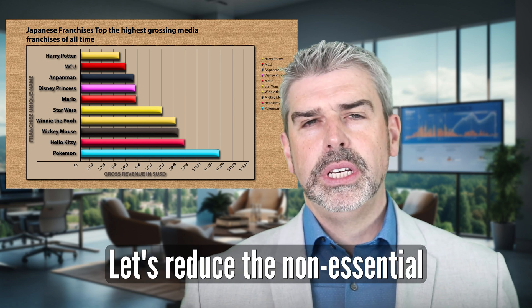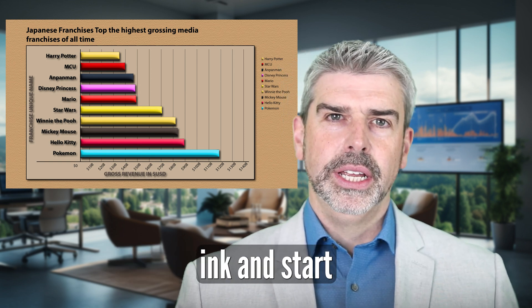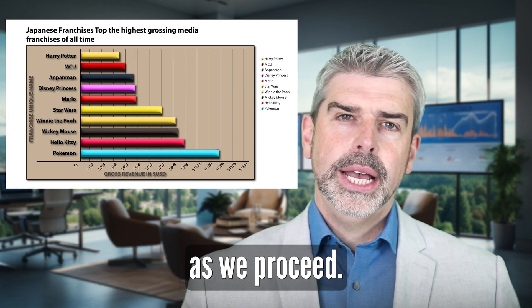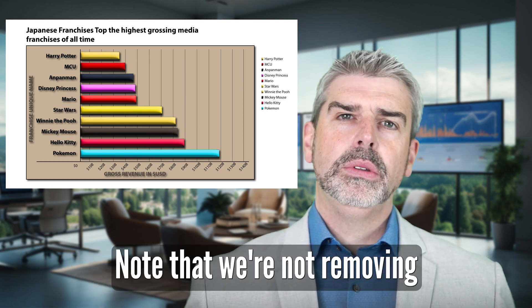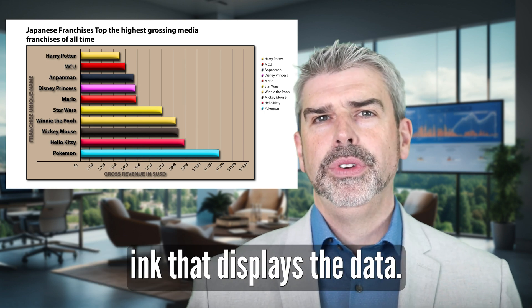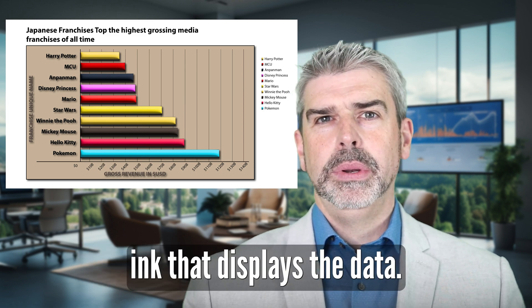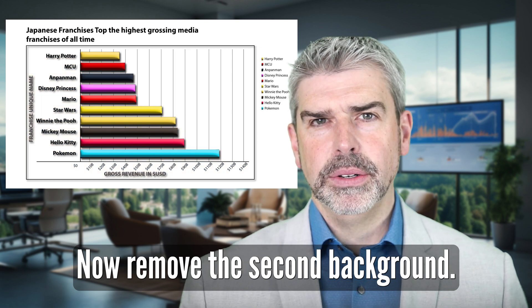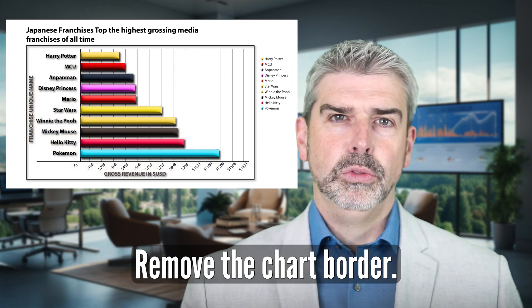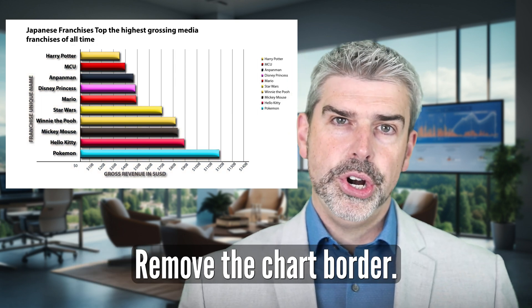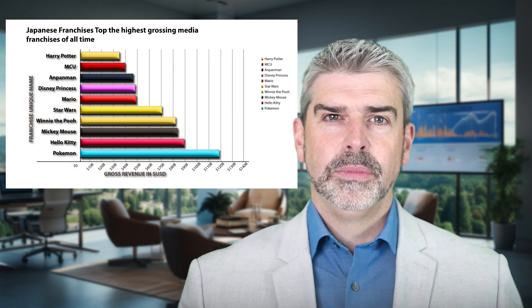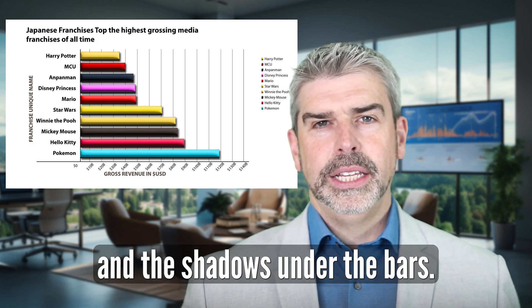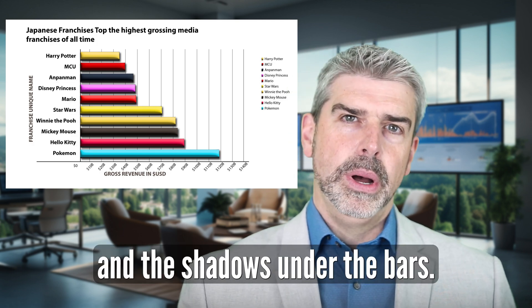Let's reduce the non-essential ink and start with removing the main background. As we proceed, note that we're not removing ink that displays the data. Now remove the second background. Remove the chart border. Remove the shadows on the labels. And the shadows under the bars.